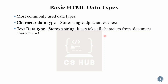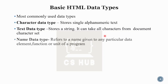Letters and numbers — that is the combination of the text data type. The name data type is a name given to a particular data element, such as a function, which is a unit of a program. Head, body — those are the names of our elements, and those are the functions.